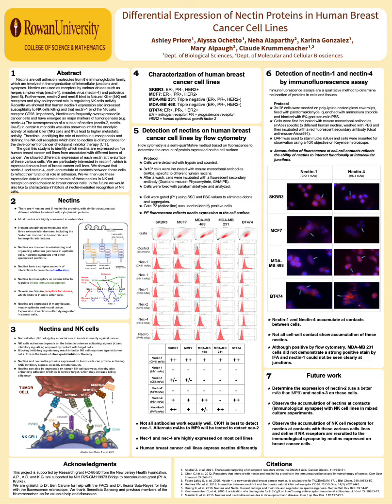Referring to Box 6, we used immunofluorescence assay as a qualitative method by using a red fluorescent secondary antibody called goat anti-mouse Alexa-594 to determine the location of Nectin proteins in the cells and tissues. As noted from our flow cytometry analysis, our two highly expressed antibodies, CK41 and HN4, showed the strongest accumulation of Nectin-1 and Nectin-4 respectively between the cells. The accumulation of fluorescence at cell-to-cell contacts reflects the ability of Nectins to interact functionally at intercellular junctions. Despite a positive result by flow cytometry, MDA-MB-231 cells did not demonstrate a strong positive stain by immunofluorescence assay. We also note that not all cell-to-cell contacts show accumulation of these Nectins.